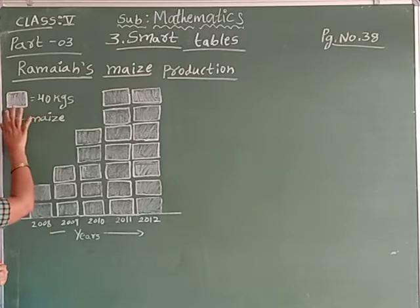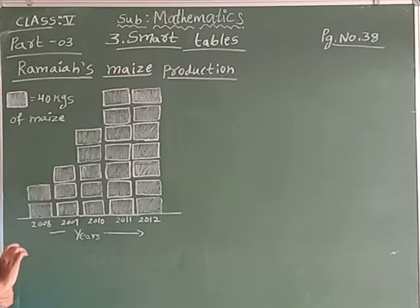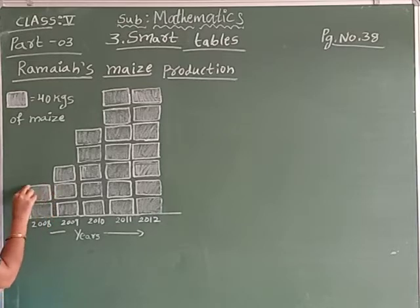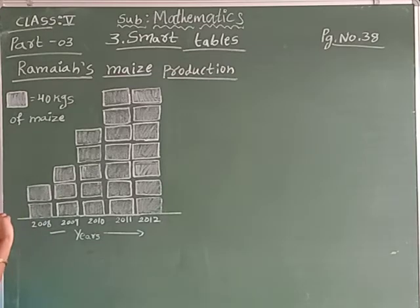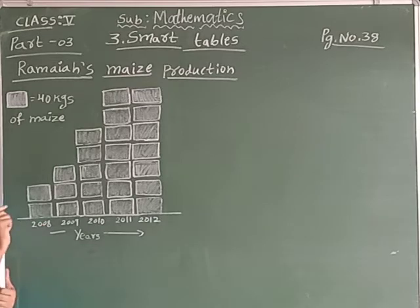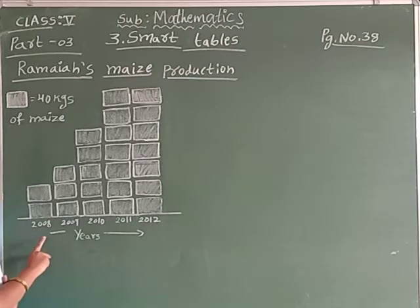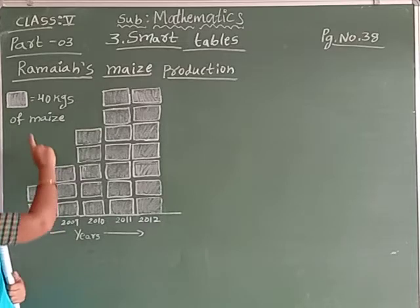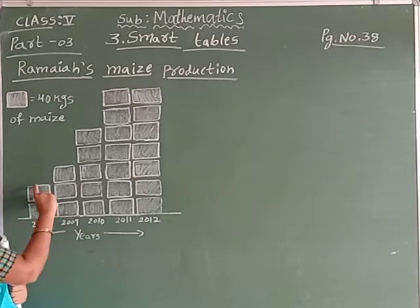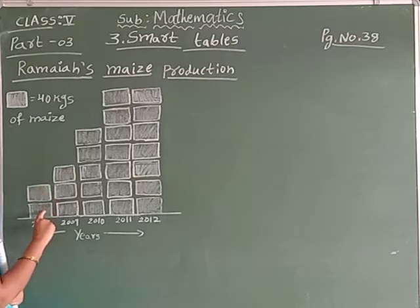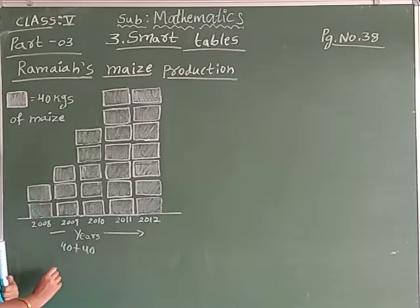Now, one box means what here? One box means 40 kg of maize. So here, how many kg of maize grow in his field? Find it in 2008. One box means 40 kg — so 40 plus 40. How many kg of maize? 40 two times only, 40 into 2.